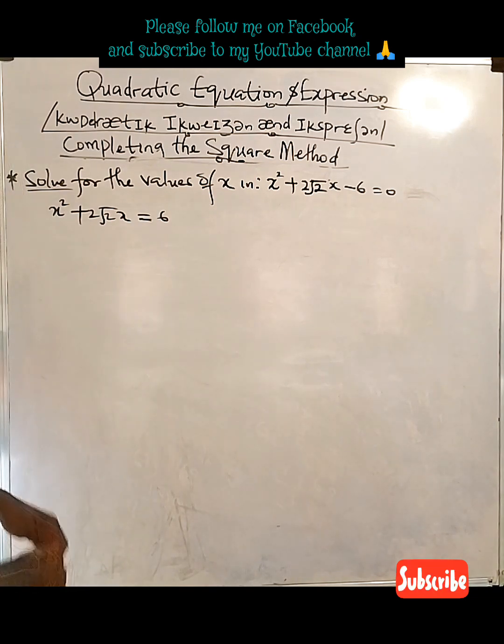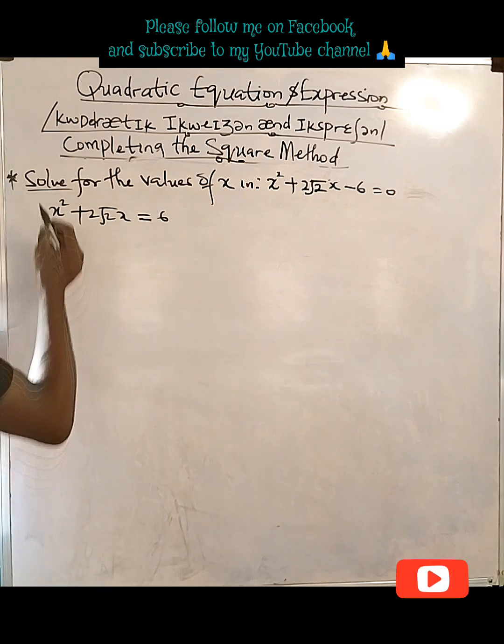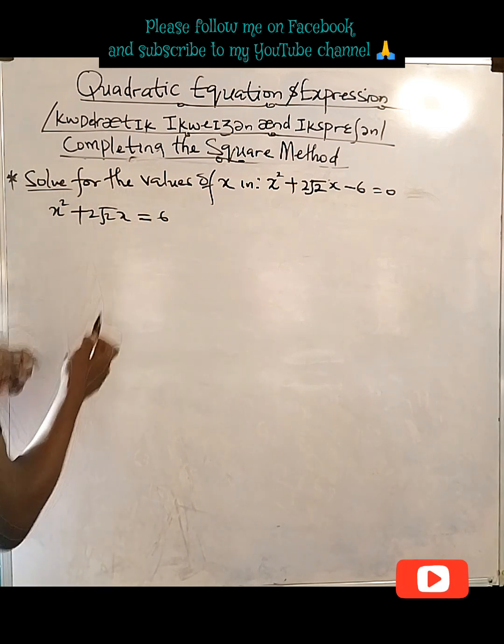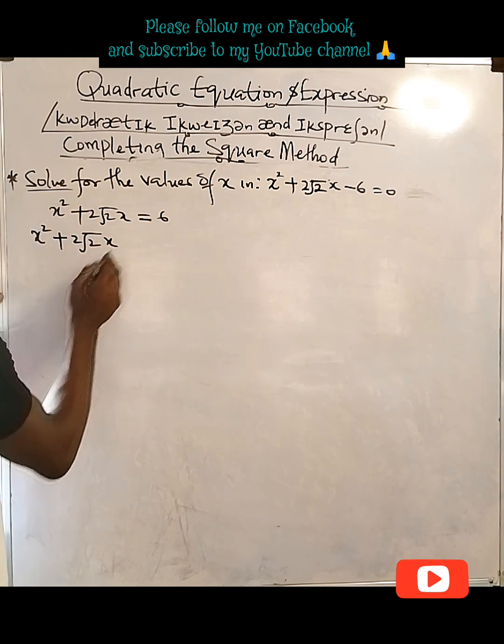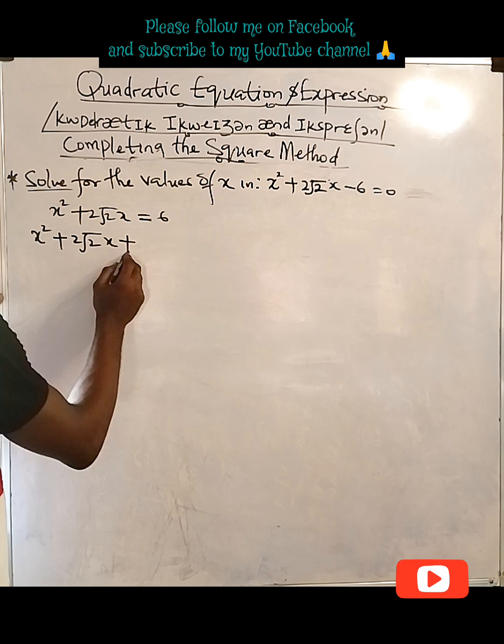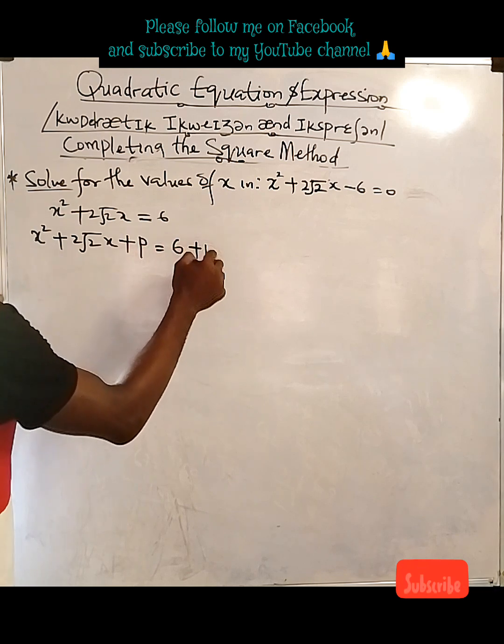So x squared plus 2 root 2 x equal to 6. The next thing we do is look for a way to add something to this that will help it become the kind of quadratic equation that we desire. So we can add p. Let me add p this time around, plus p, equal to 6 plus p.